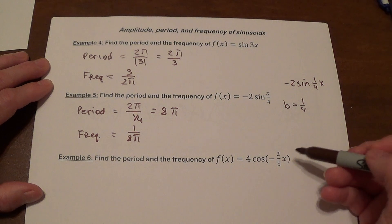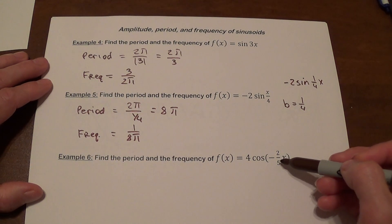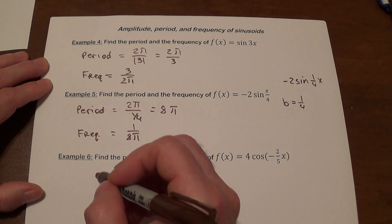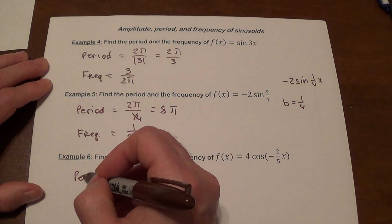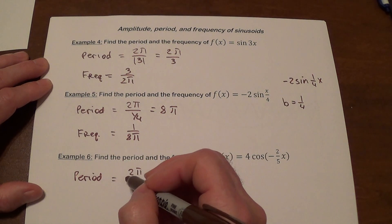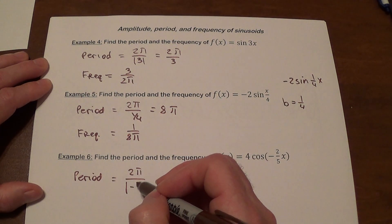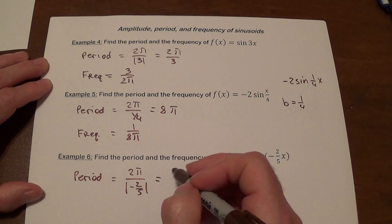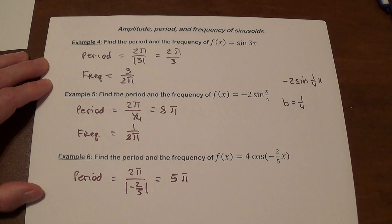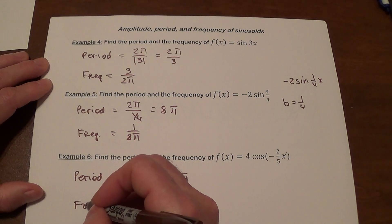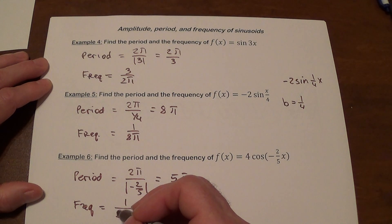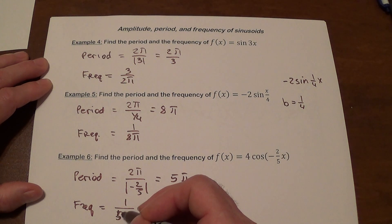Note that the number here is negative — it doesn't matter. The value of b is negative two-fifths. To calculate the period, we take 2π and divide it by the absolute value of b, which is two-fifths, giving us 5π once we simplify. The frequency is the reciprocal, which is 1 over 5π.